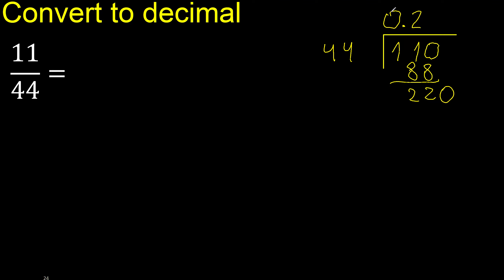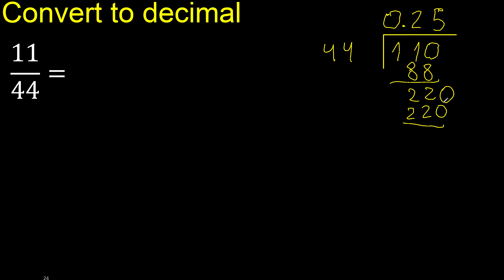Point is here — point only once. 220. 44 — multiply by which number? Multiply by 6 is 264, which is greater. Multiply by 5 is exactly 220, which is not greater. Subtract: 0. Therefore finish.